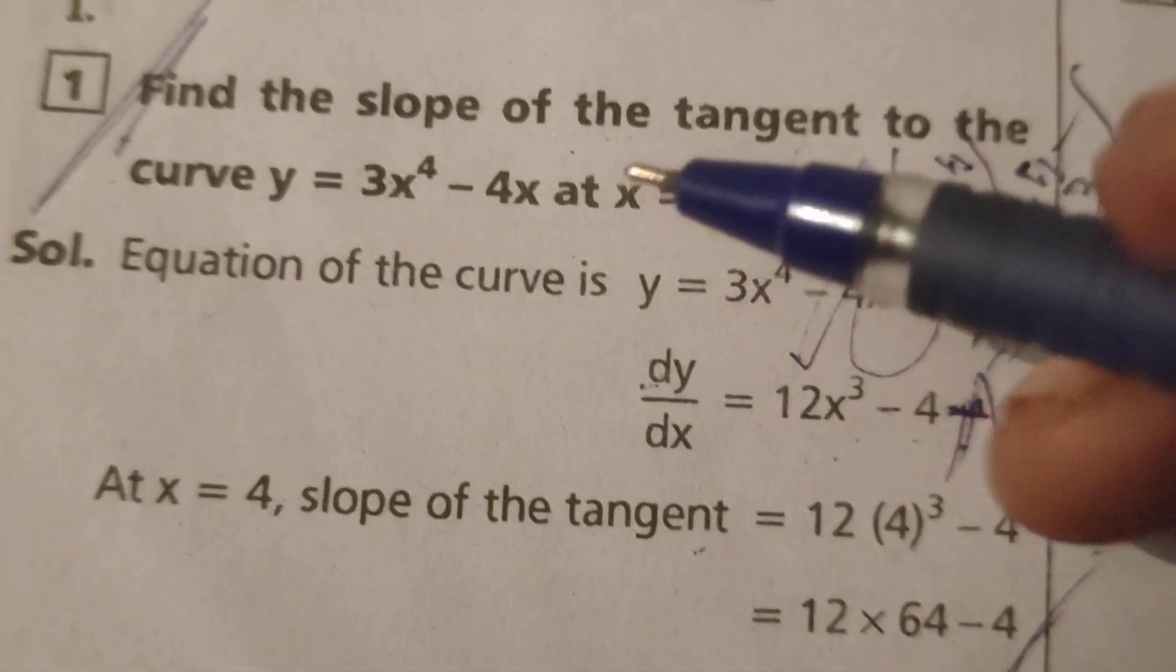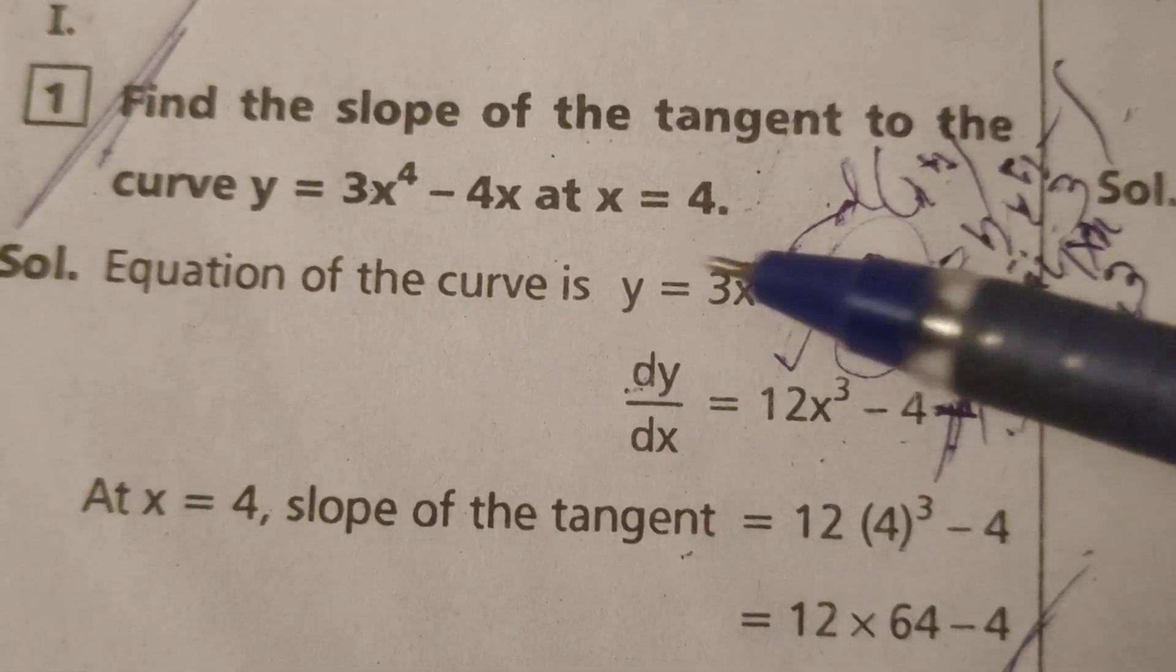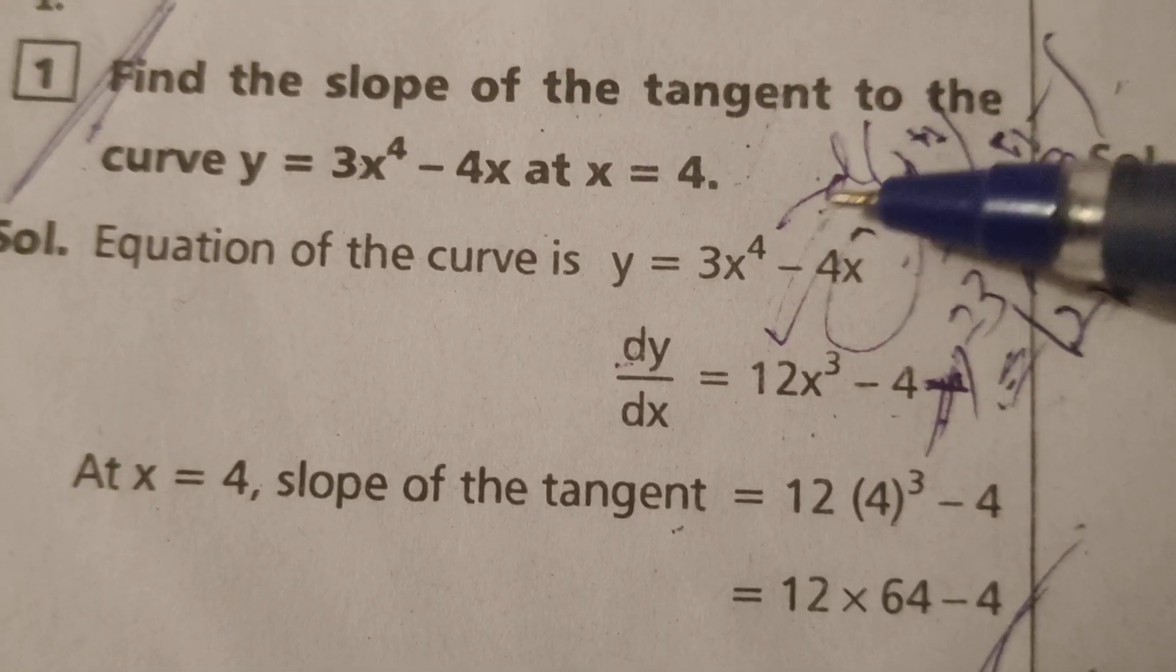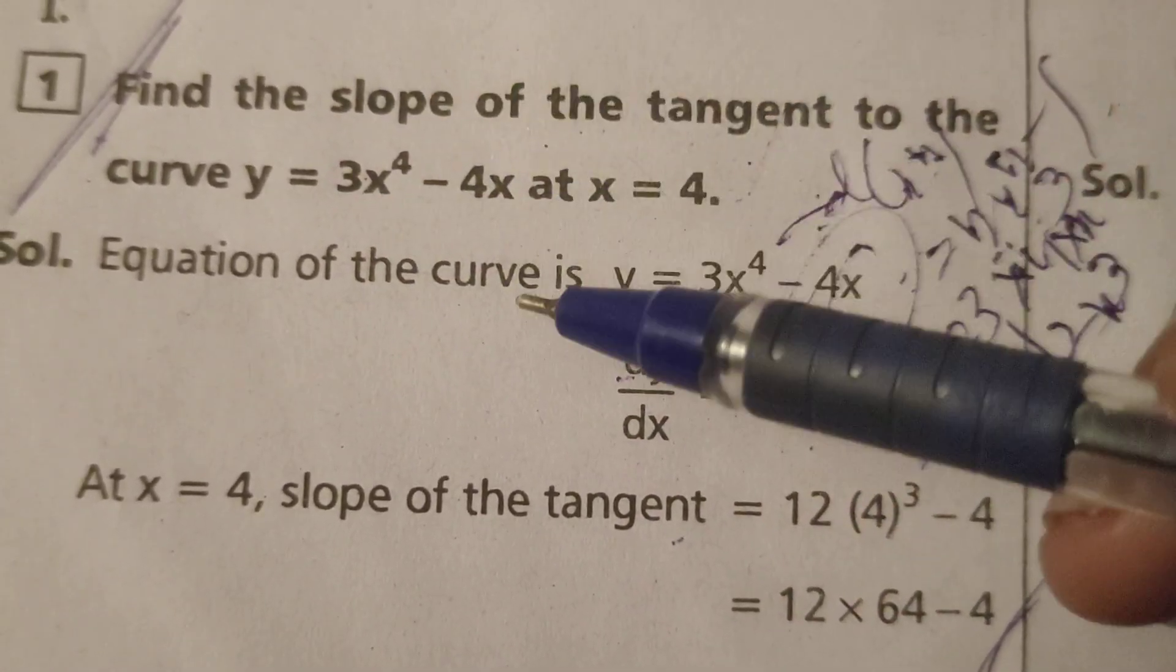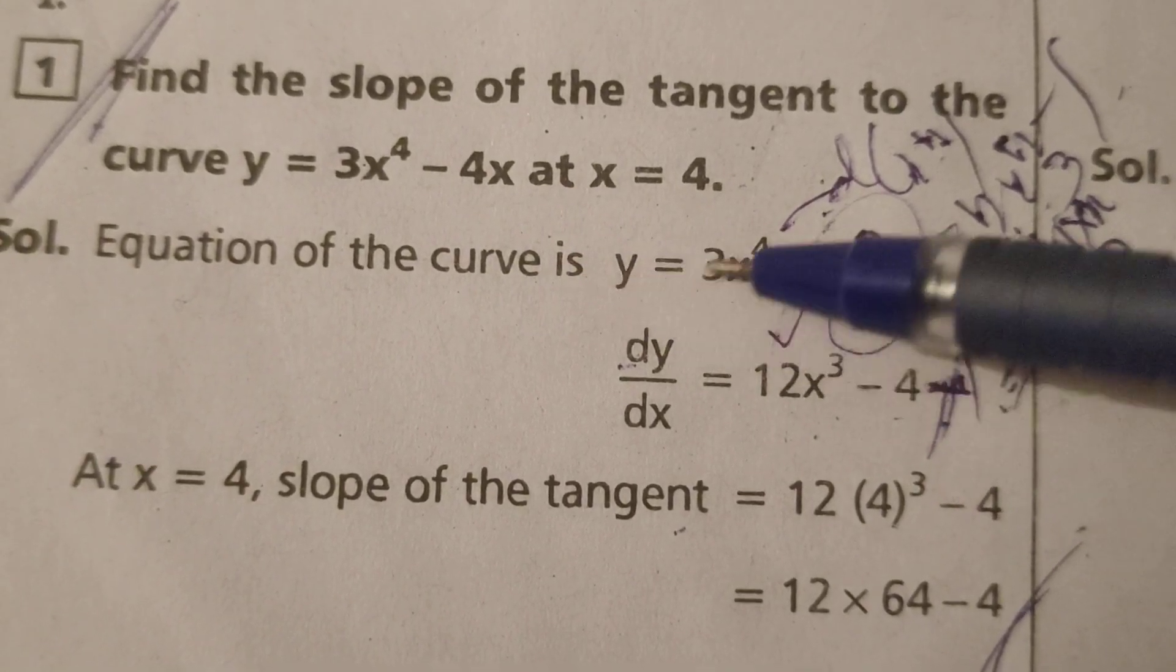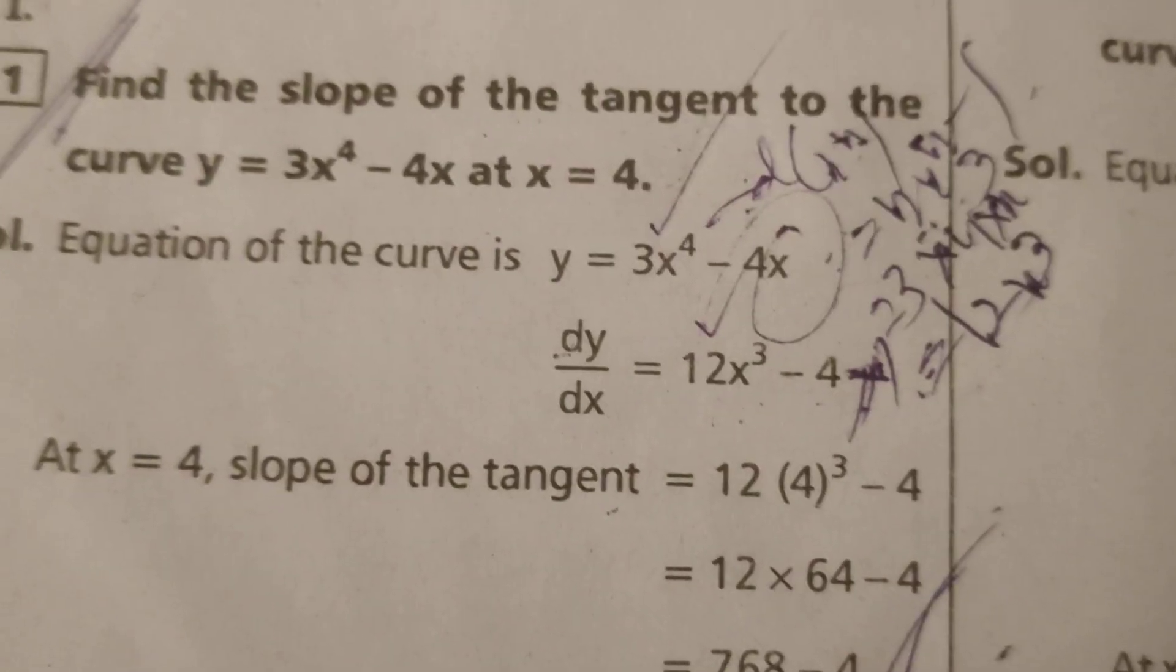764 is the slope of the tangent to the curve y equals 3x to the power 4 minus 4x at x equals 4. Thank you.